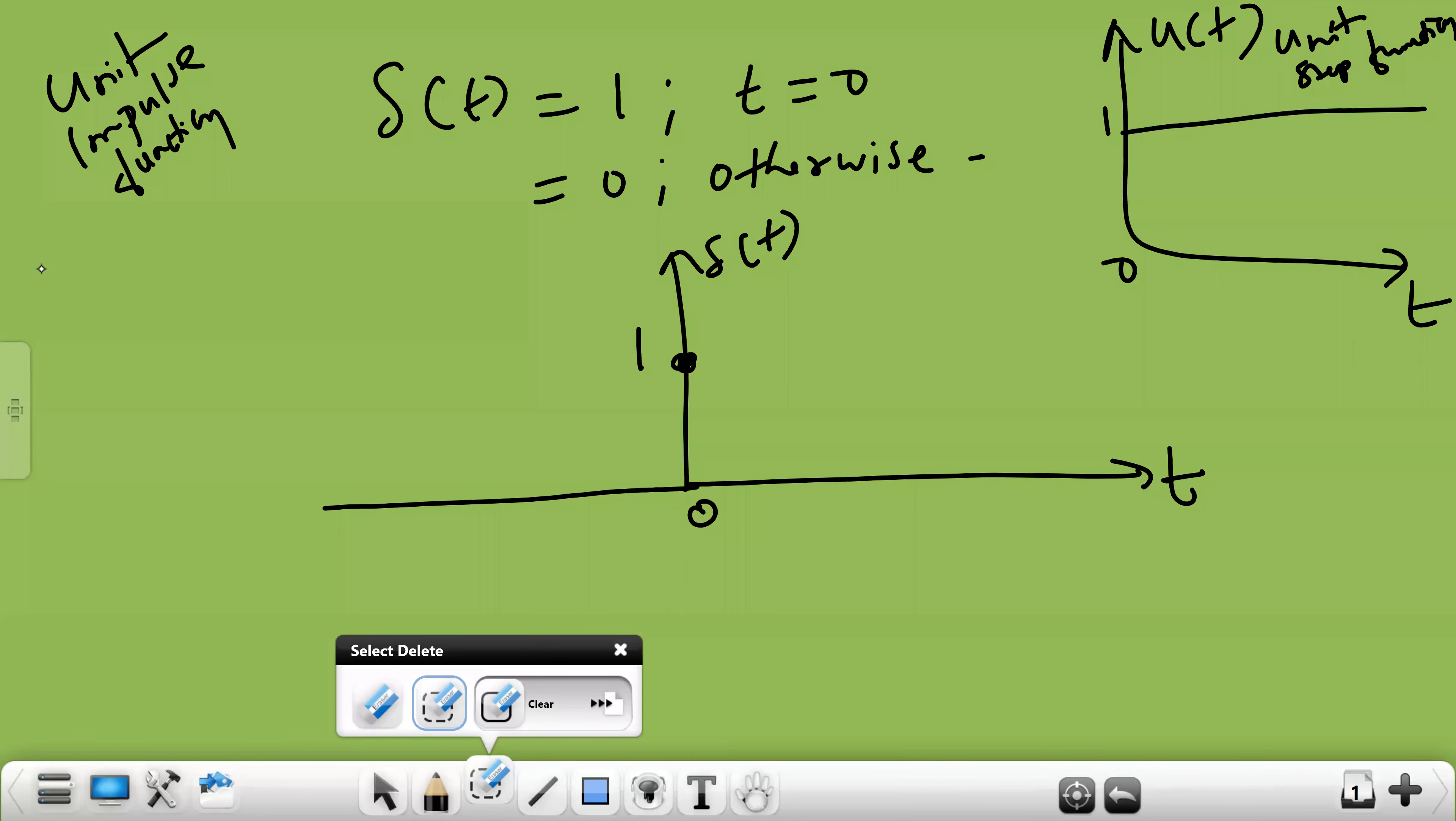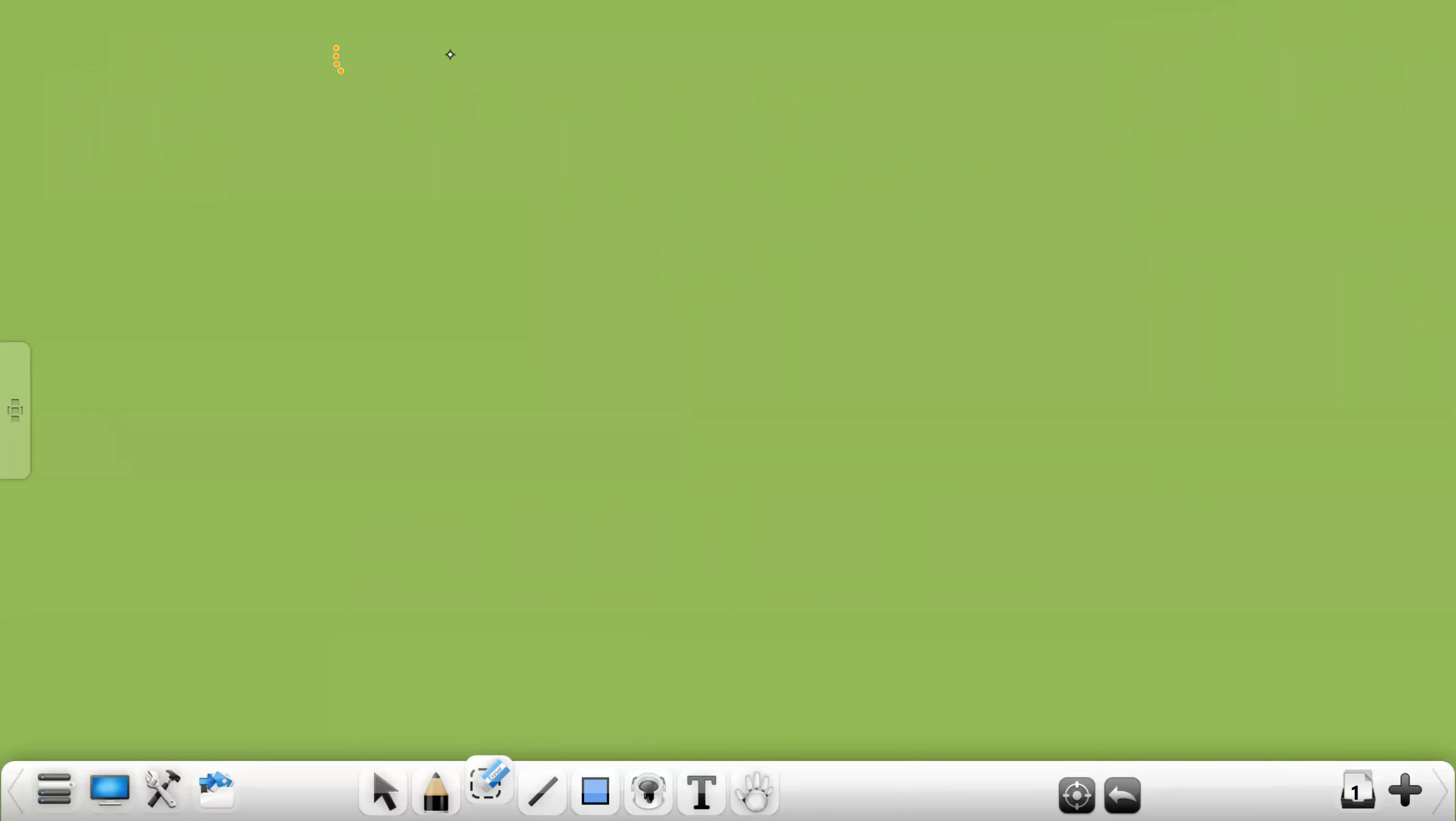Unit ramp function is represented as R of t. The definition is R of t is equal to t, for t greater than or equal to 0 and is equal to 0 otherwise. So this is the case. This is the unit ramp function.